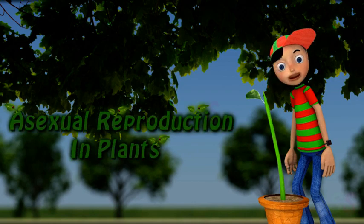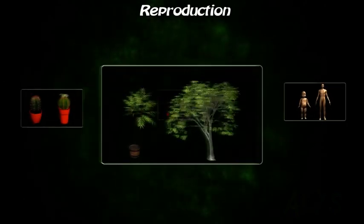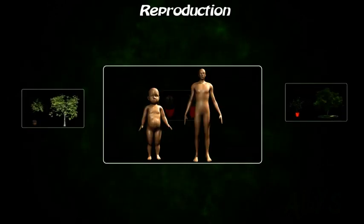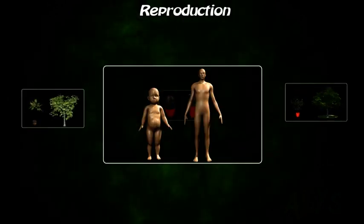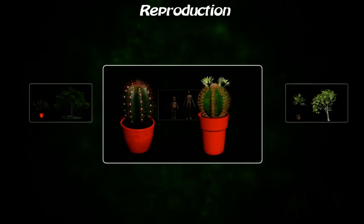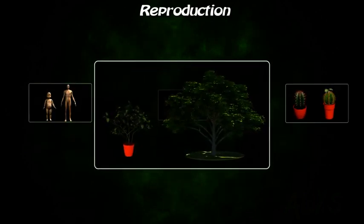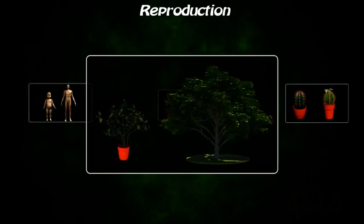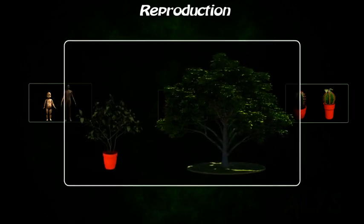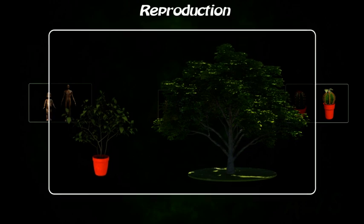Asexual Reproduction in Plants. We know no living organism is immortal. Given this reality, have you ever wondered how vast numbers of plant and animal species have existed on earth for several thousands of years? There must be some process in living beings that ensures continuity. Yes, and that is reproduction. Reproduction is a biological process in which an organism gives rise to young ones similar to itself.